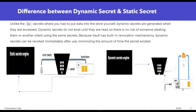However, in dynamic secret, dynamic secrets are generated when they are accessed. For example, AWS comes under the dynamic secret category. Whenever a user tries to access some resources, Vault communicates with AWS through the API and generates a new user key. This process keeps continuing — for each and every request, a new access key and secret key will be generated.